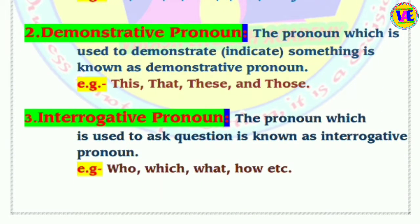The third kind is interrogative pronoun. The pronoun which is used to ask a question is known as interrogative pronoun. For example, when we say 'Who are you?' — here 'who' is the interrogative pronoun. So the pronoun which is used to ask a question is known as interrogative pronoun.